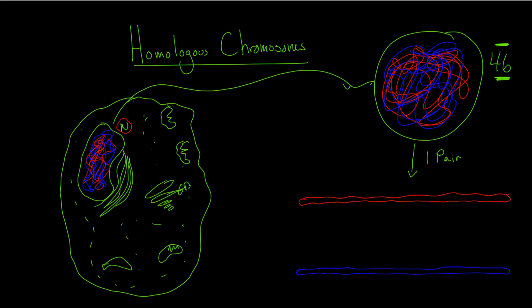Okay, so now I've drawn two of them. This is one pair. The red is from your mother - this is your mother's contribution to the pair, and your father gives the other contribution to it. So you have a chromosome from your mother, a chromosome from your father. Those are homologous chromosomes.